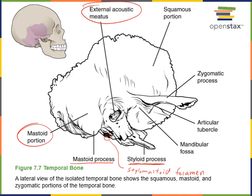The stylomastoid foramen contains the facial nerve, a nerve important for exciting the muscles of facial expression. The inferior region of the temporal bone is known as the petrous portion. Deep in the petrous portion of the temporal bone is where the internal and middle ear are located. There are three small bones in the middle ear — the auditory ossicles: malleus, incus, and stapes.